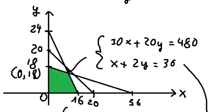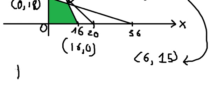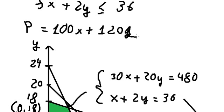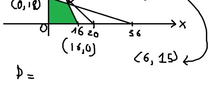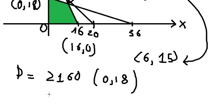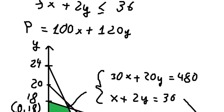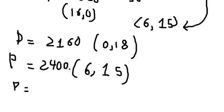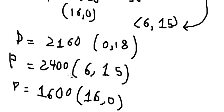Solving the system gives x equals 6 and y equals 15. Now we evaluate the profit at each corner point. At (0, 18): P equals 100(0) plus 120(18) equals 2160. At (6, 15): P equals 100(6) plus 120(15) equals 2400. The maximum profit is 2400, and this is the final answer.